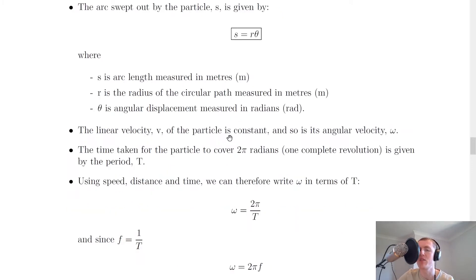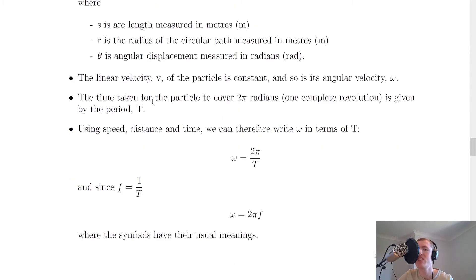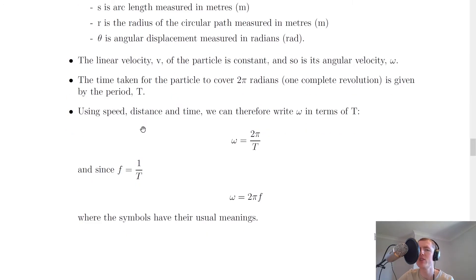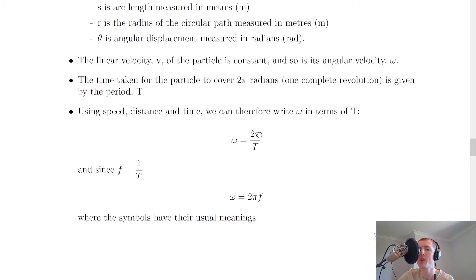Here we consider the linear velocity v and the angular velocity omega both to be constant. The time taken for the particle to cover two pi radians — one complete revolution, 360 degrees — is given by the period T. Using speed, distance, and time, we can write omega in terms of the period T. So omega, the angular velocity, equals two pi over T — the angular displacement two pi radians divided by the time for one revolution.